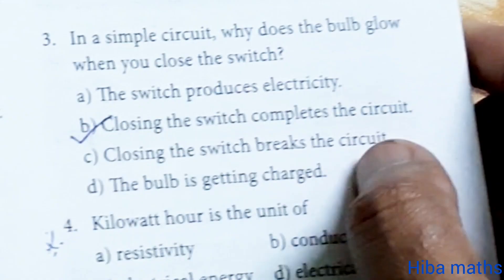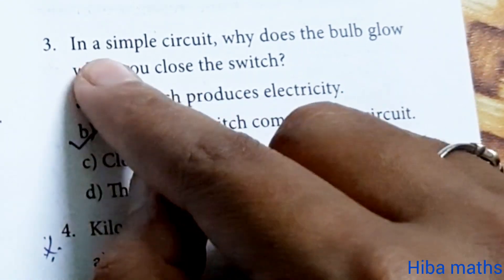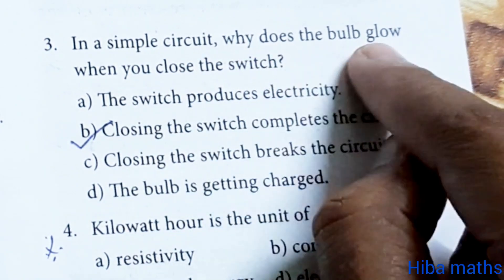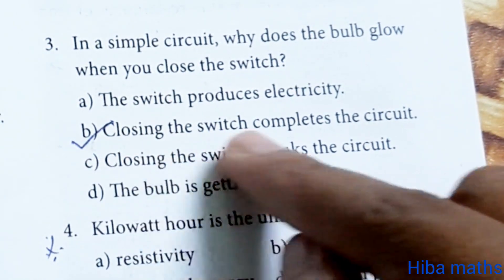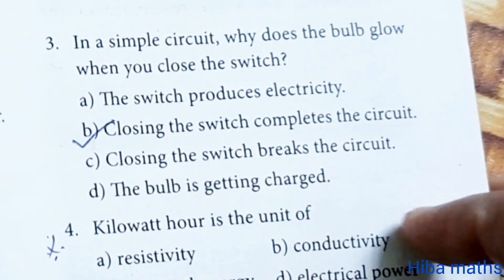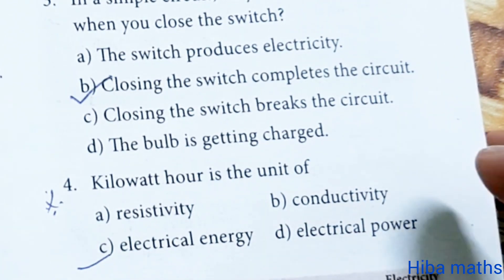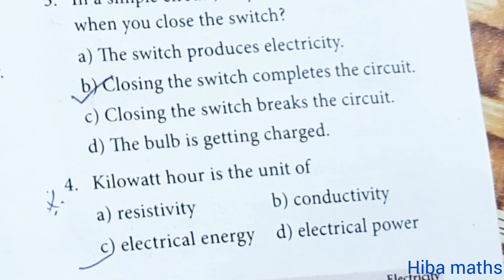Third question: in a simple circuit, why does the bulb glow when you close the switch? Closing the switch completes the circuit, so the circuit closes the bulb and the current flows so it glows.